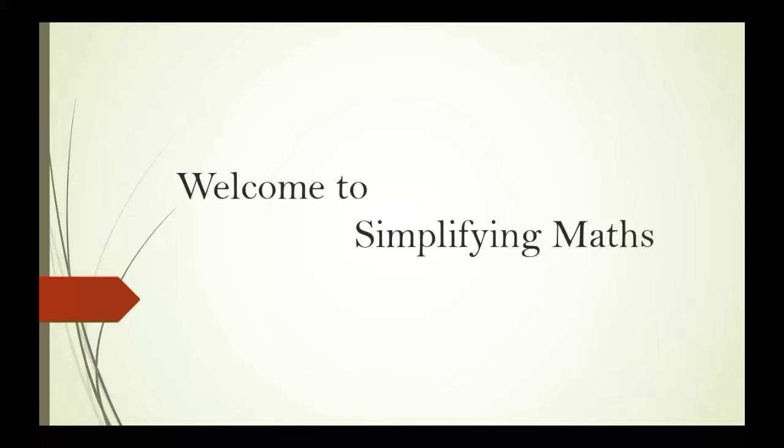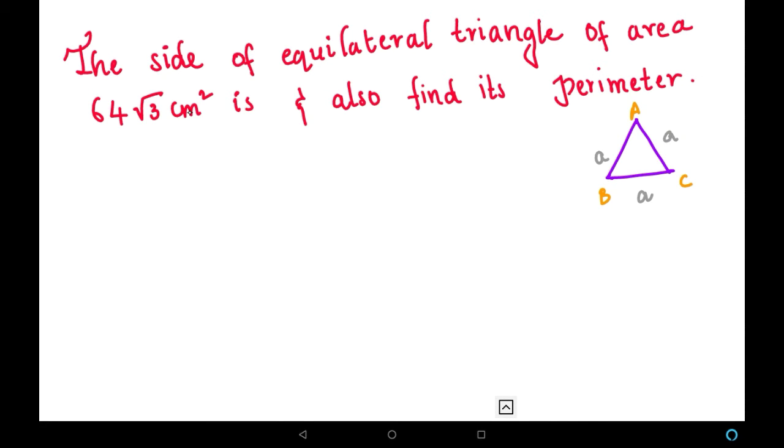Friends, welcome to Simplifying Maths. In this video, we are going to solve this problem: the side of an equilateral triangle of area 64√3 cm² and also find its perimeter. We have to find the side of the equilateral triangle and also its perimeter.